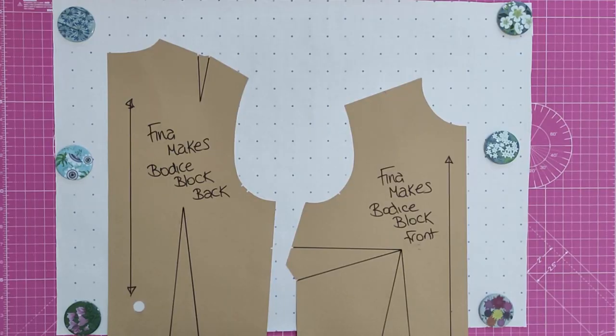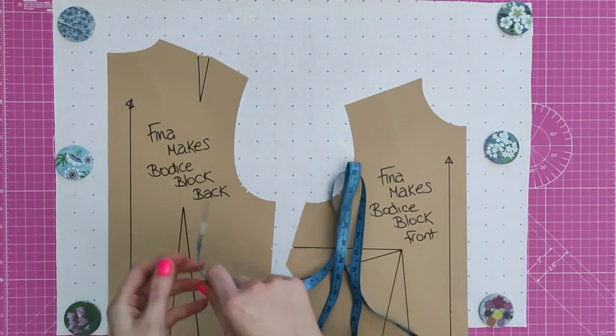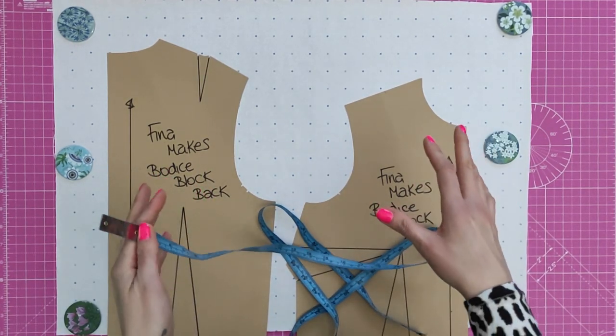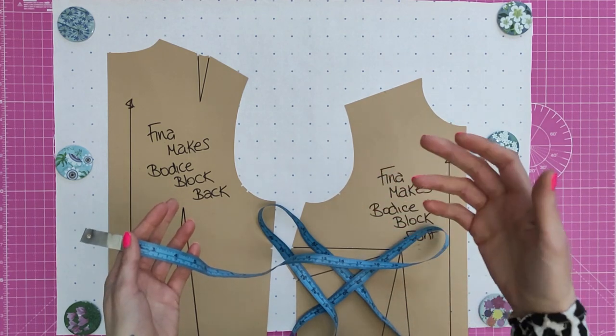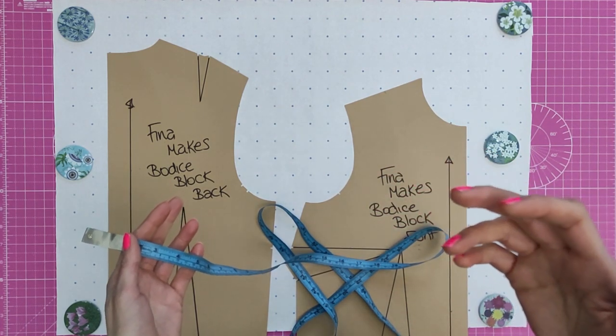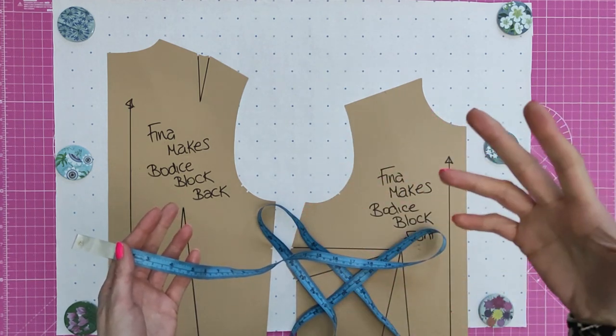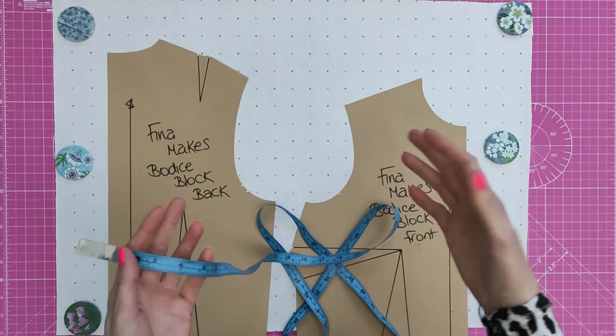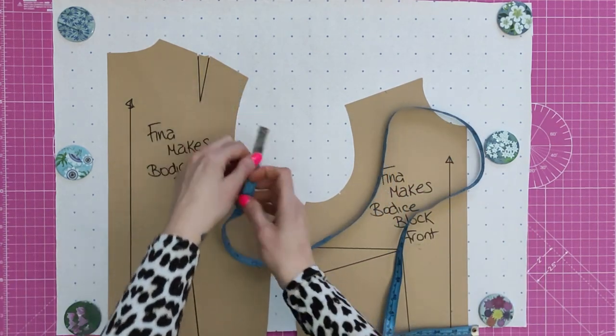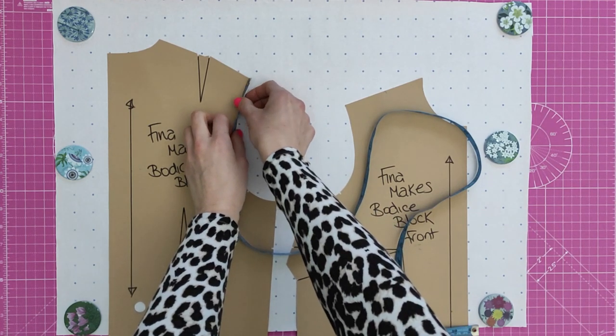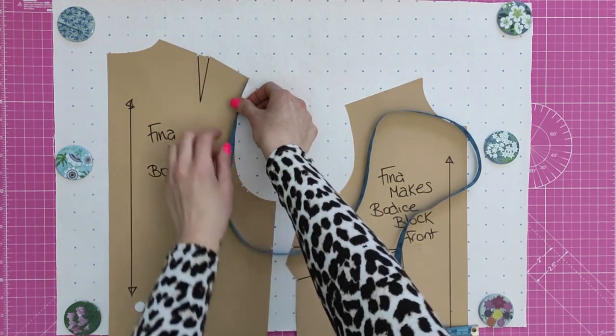To make this sleeve block we need three measurements: the front armhole, the back armhole, and the length. First up I'm going to measure my armholes. I've got my bodice block here. What I would advise you is to fit your bodice block, make sure you're happy with the fit and that you like the shape of the armhole, and then once you've turned that into a block, traced it off onto card maybe, then make a sleeve for it. I'm going to measure my back armhole. I'm going to get my tape measure, hold it up sideways and then measure the curve from shoulder point to underarm.